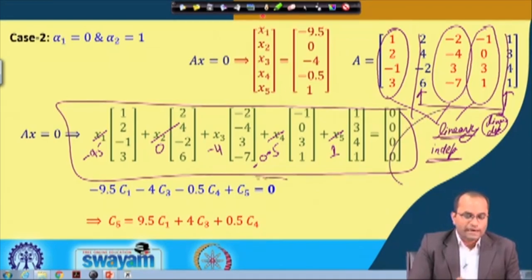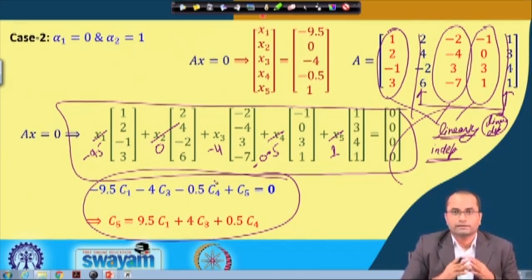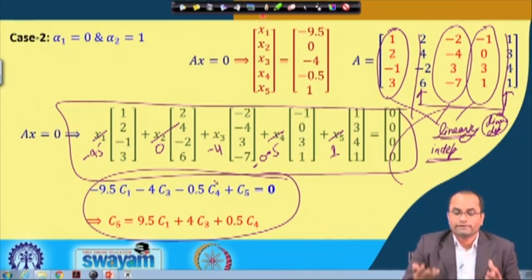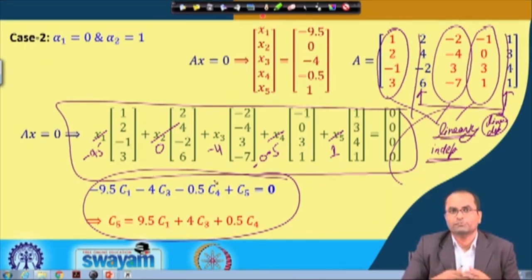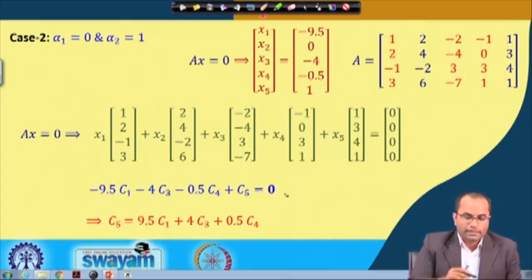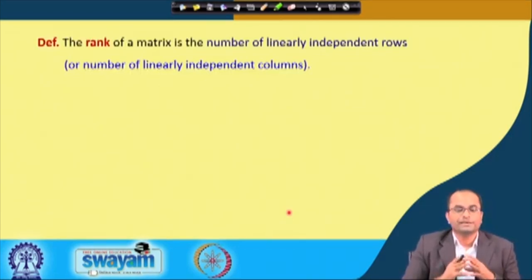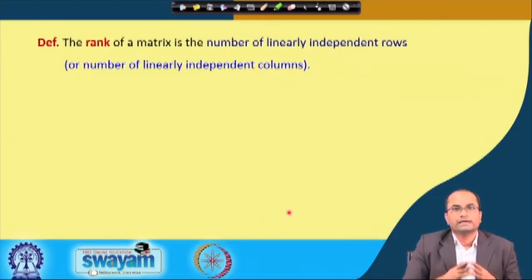The same observation we made with columns can be made with rows as well. Those rows where we get the pivots are the same number of rows which are independent in this matrix. So we can also define that the rank is the number of independent rows. The rank is therefore the number of linearly independent rows or the number of linearly independent columns in a matrix.